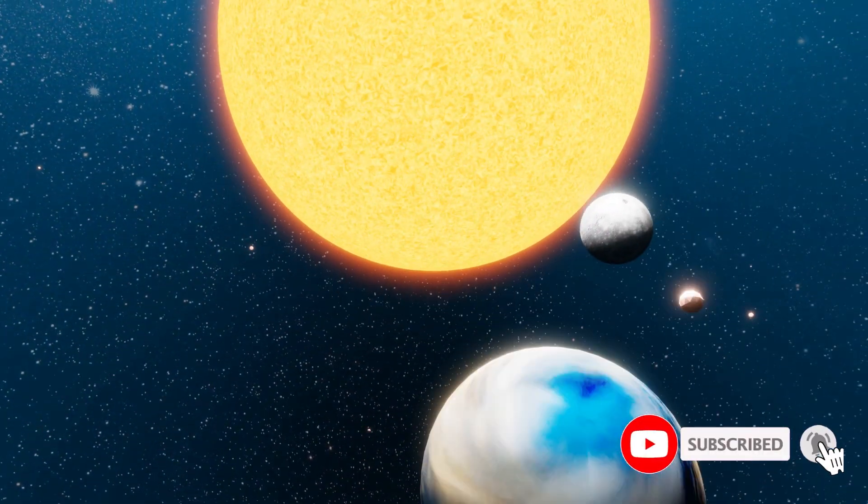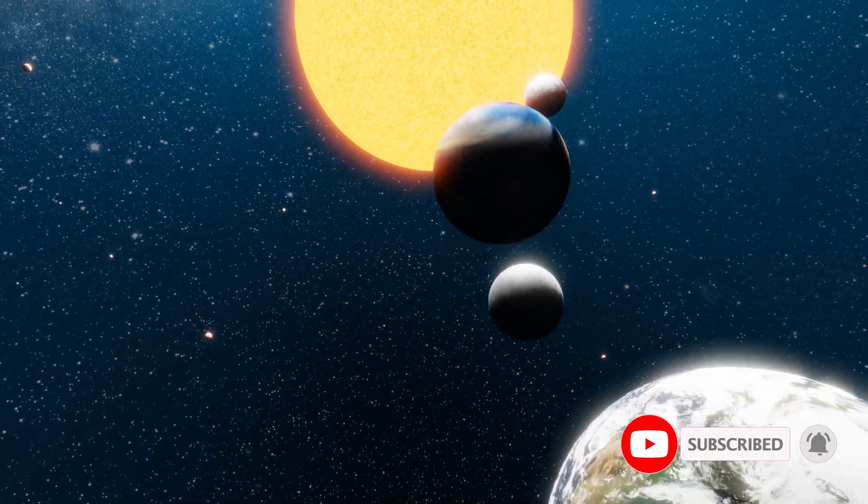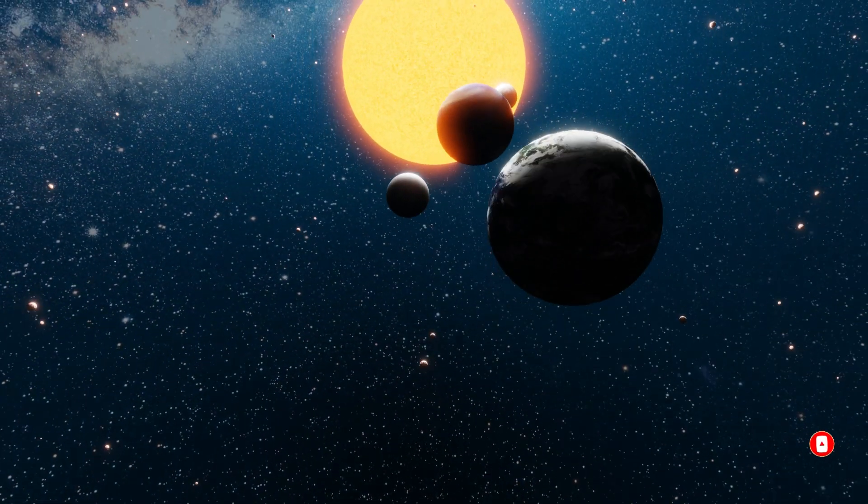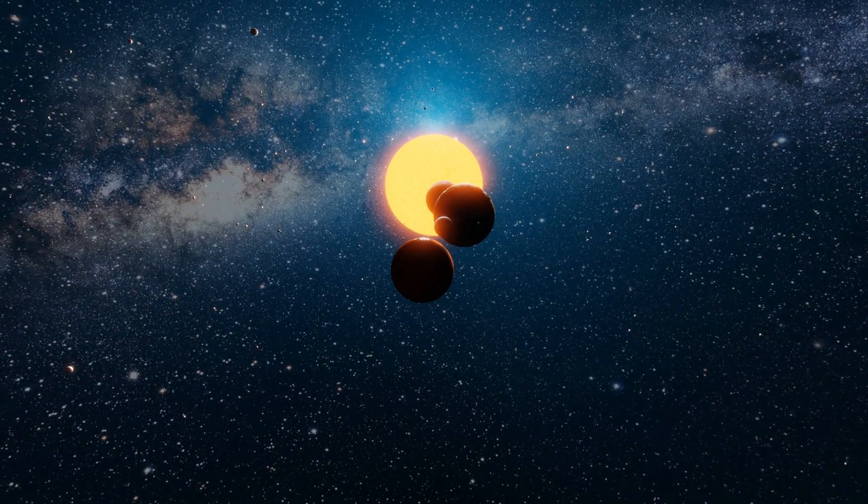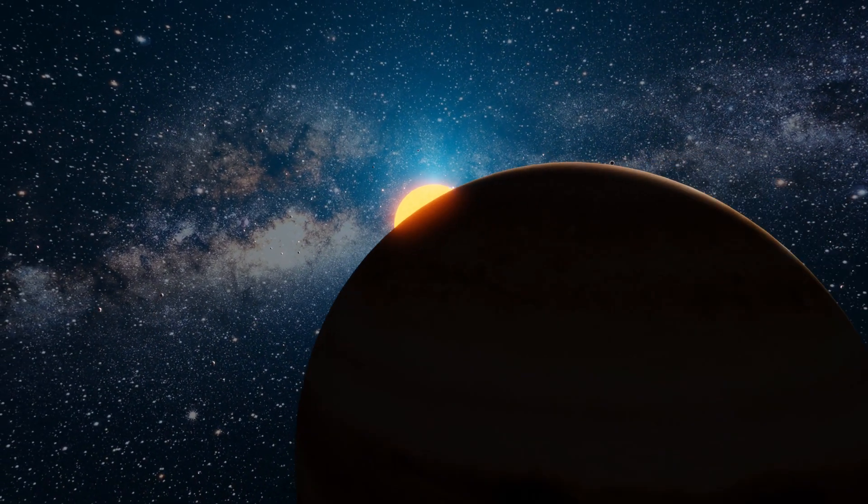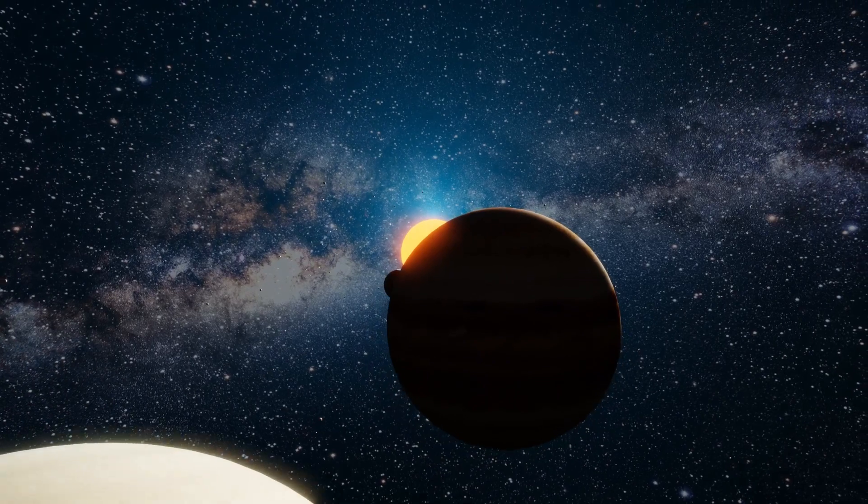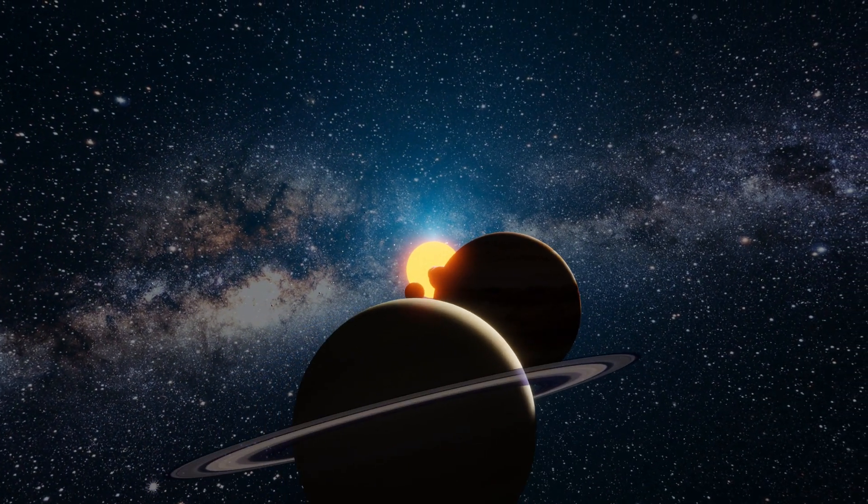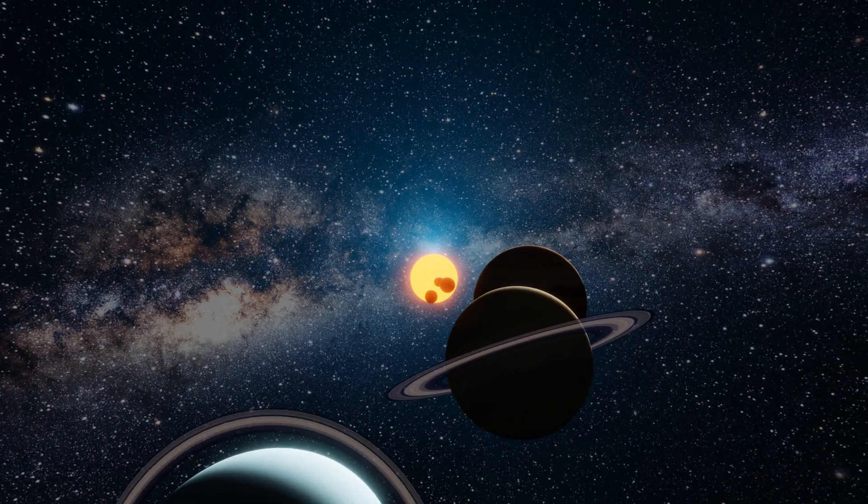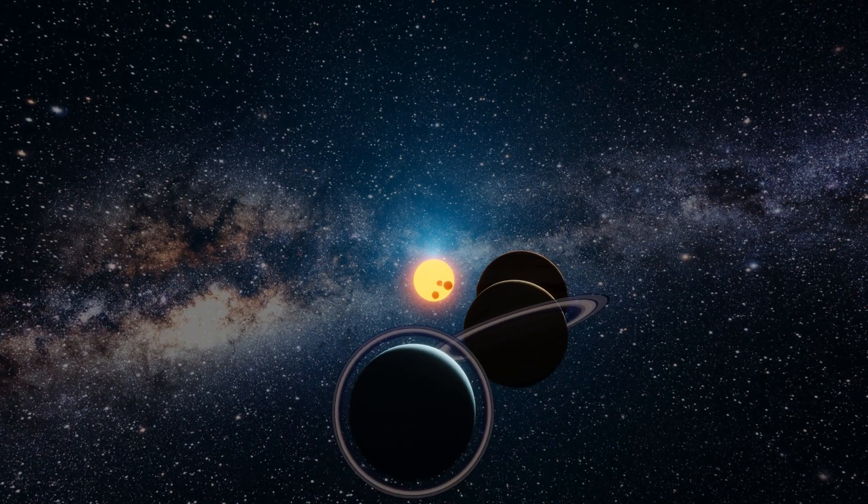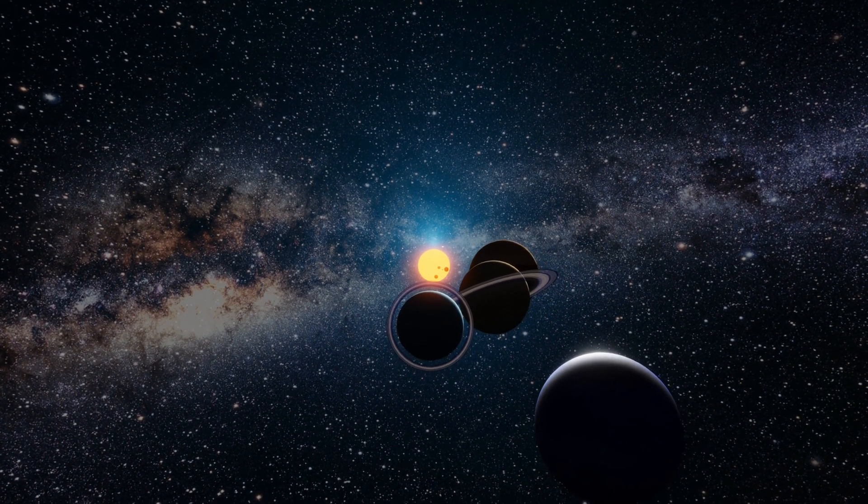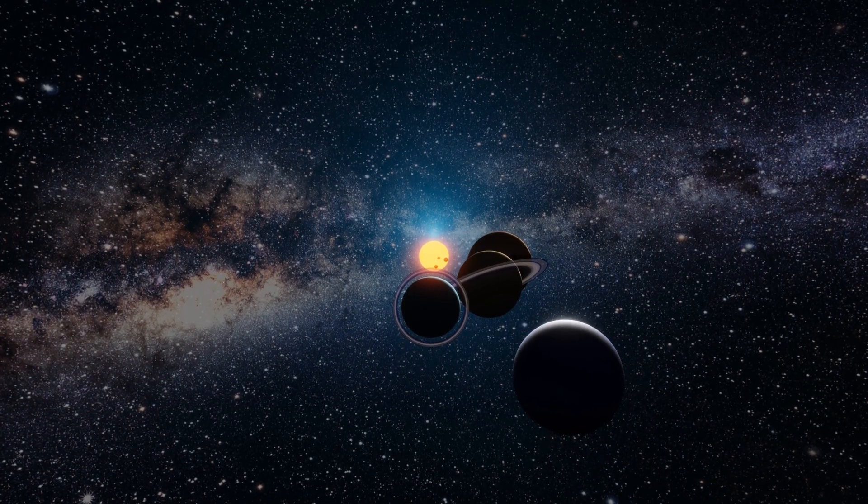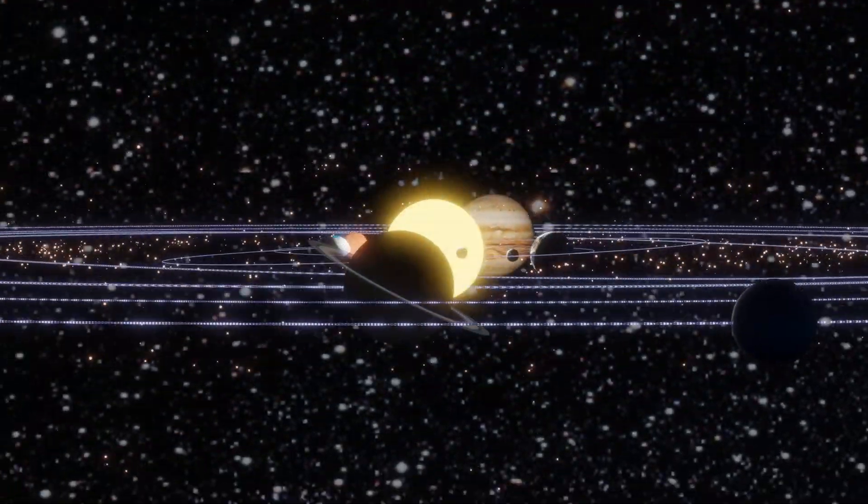The solar system is a collection of celestial objects that orbit around the sun. It includes the sun, eight planets—Mercury, Venus, Earth, Mars, Jupiter, Saturn, Uranus, and Neptune—dwarf planets, moons, asteroids, comets, and other small objects. The sun is at the center of the solar system and contains more than 99% of the total mass of the system.